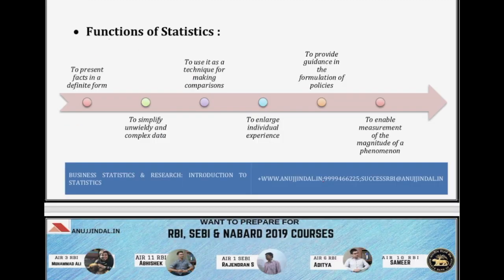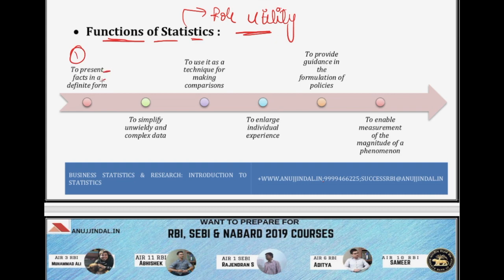Now let's talk about functions of statistics — what role do statistics play and what utility do they provide? Number one is to present facts in a definite form. If we talk about a country's economic condition, without statistics you cannot determine whether your country is growing, not growing, or growing at an accelerated or slow pace. To analyze all this, you need statistics in hand. Without them, you cannot tell what the current scenario actually is. It is very important to use statistics to present any fact in a definite form and give it a constructive outlook.